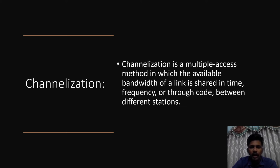If there is a common channel and many stations want to use it, we cannot just send data on that common channel because it leads to collision. In the random access protocol, any station will randomly send data at any time, which obviously leads to collision. In the control access protocol, we use reservation schemes, polling techniques, or token passing in order to handle collision. The last method is channelization, where the entire bandwidth of the channel is shared in terms of frequency, time, or code.